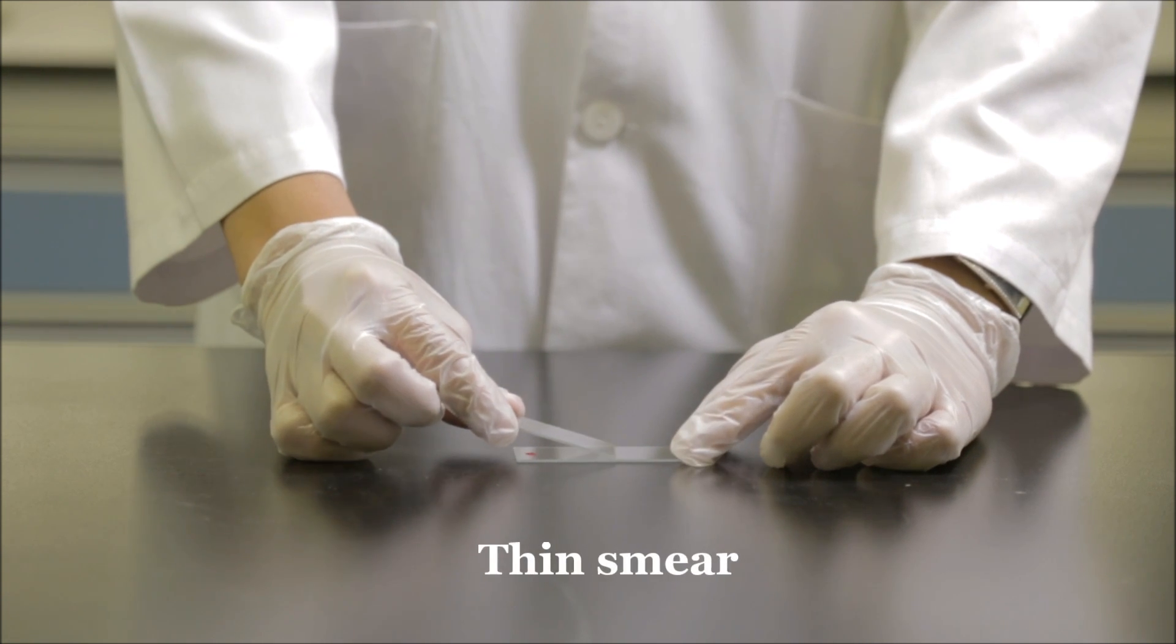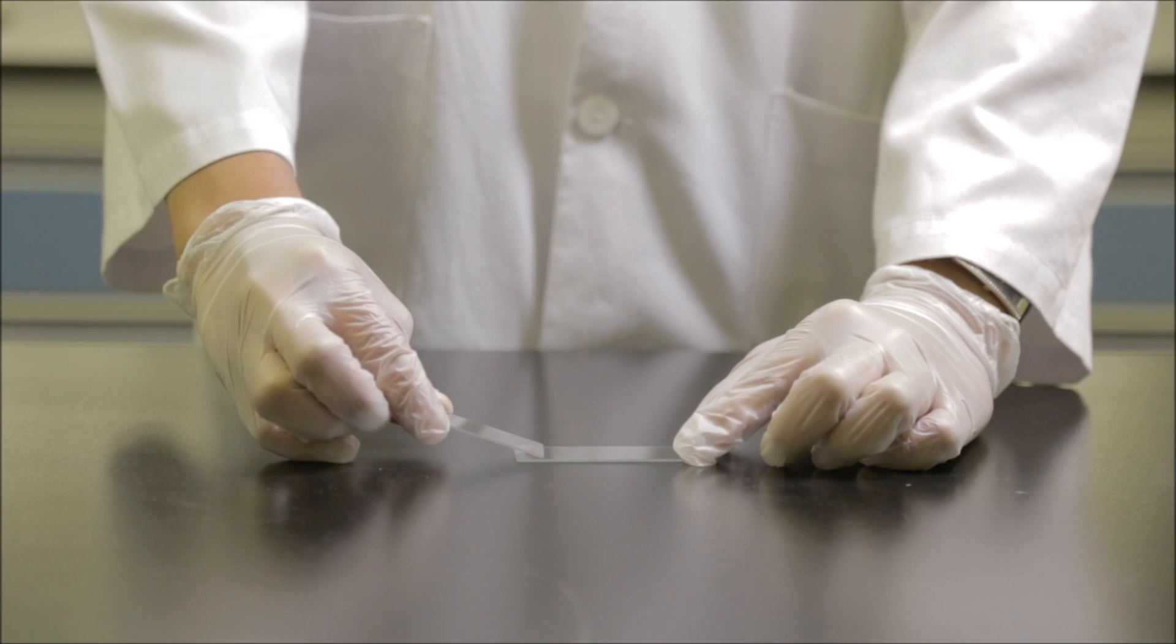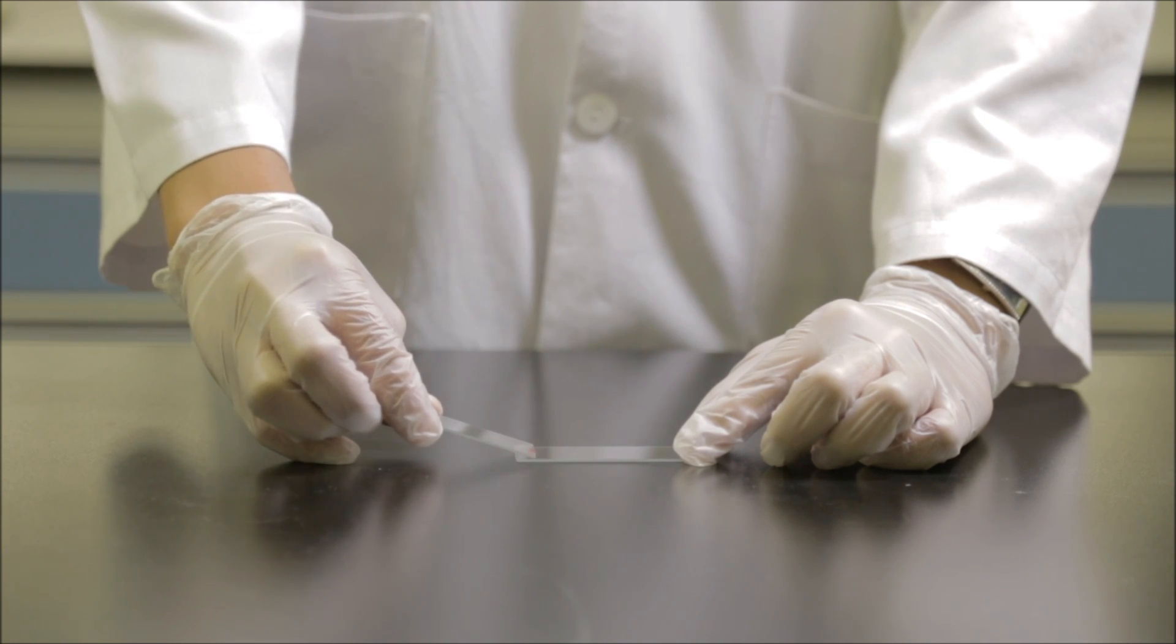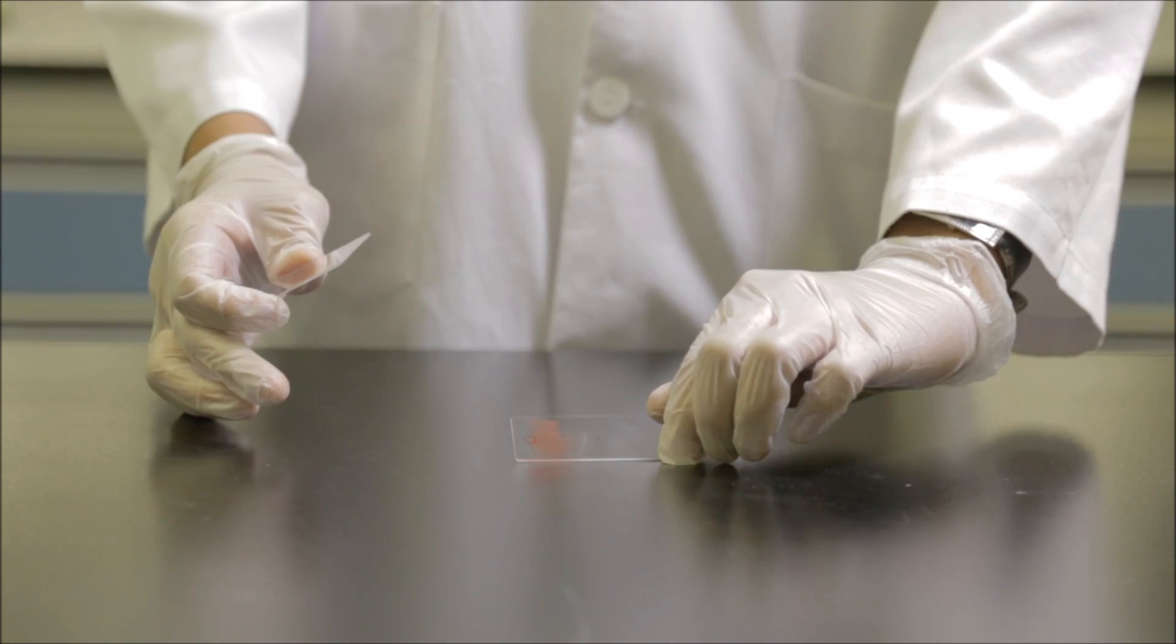In the thin smear, hold a slide at an angle of 45 degrees against the surface of the first slide. Touch the drop and let the blood spread along its edge. Push the slide forward rapidly.